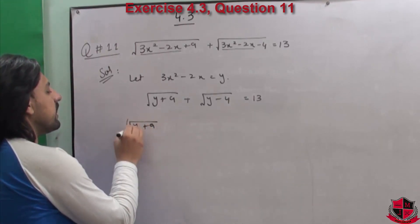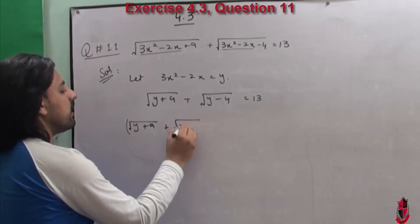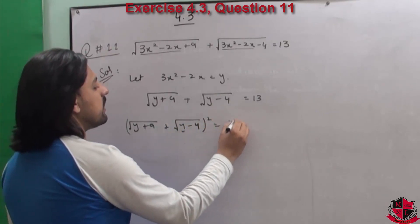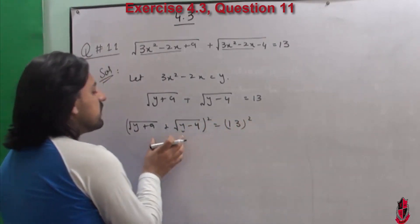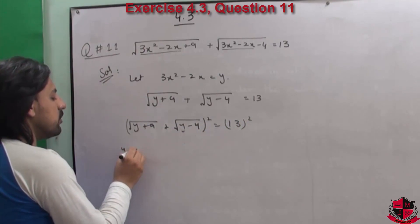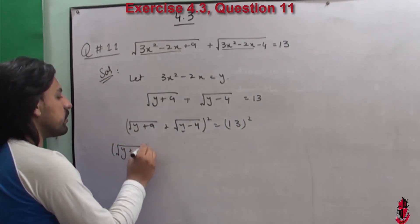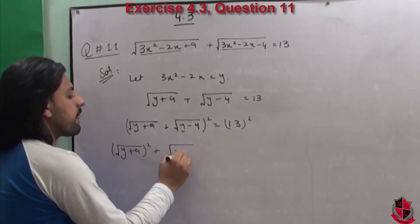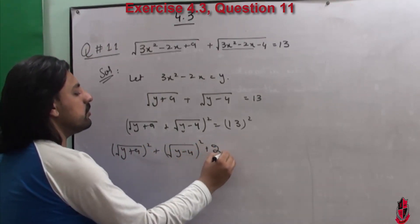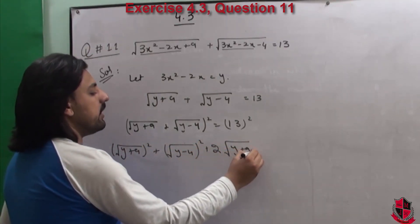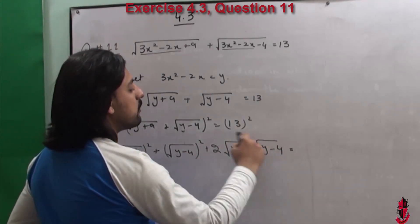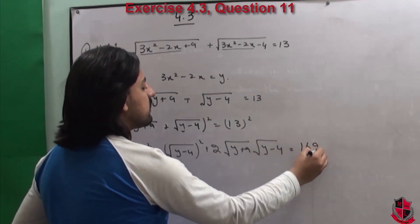So (√(y+9) + √(y-4))² = 13². यहां पर (a+b)² का formula open करें: a² + b² + 2ab. यह formula आप लोग के पास आ जाता है, equal to 13² आप लोग के पास आ जाता है।